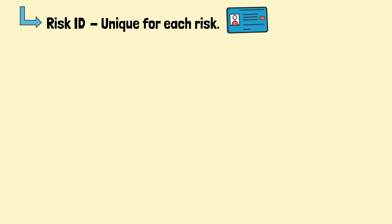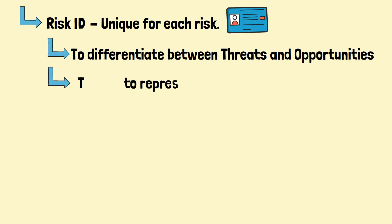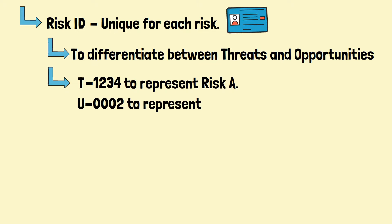It would be good if the ID can differentiate between threats and opportunities. For example, you could use the alphabet T to represent threats, followed by numbers. Similarly, the alphabet U could be used to represent opportunities.